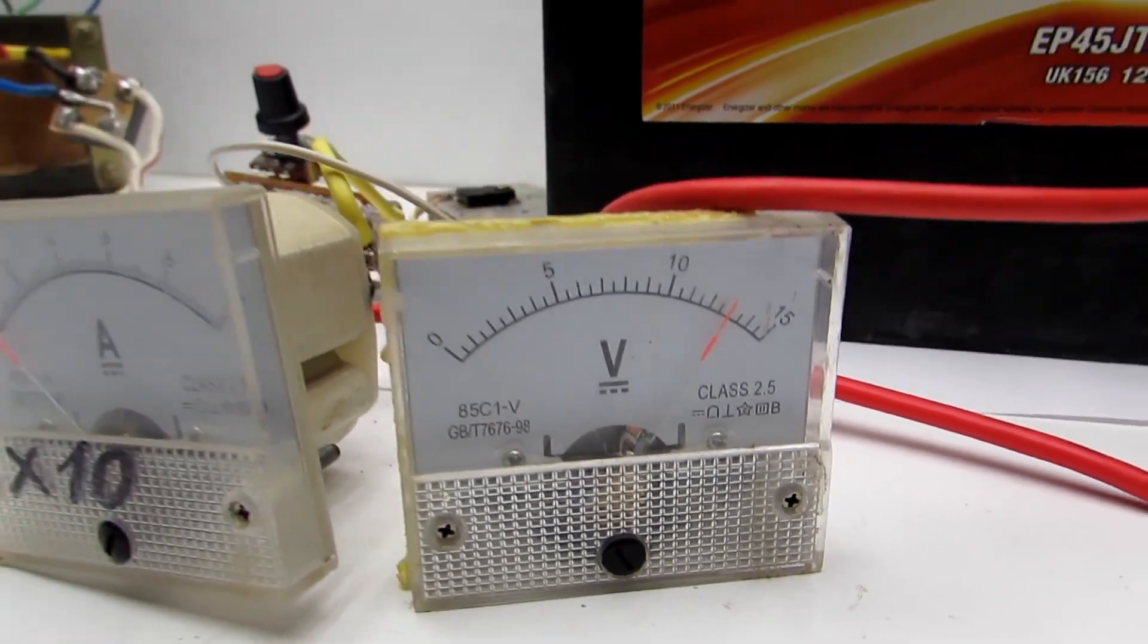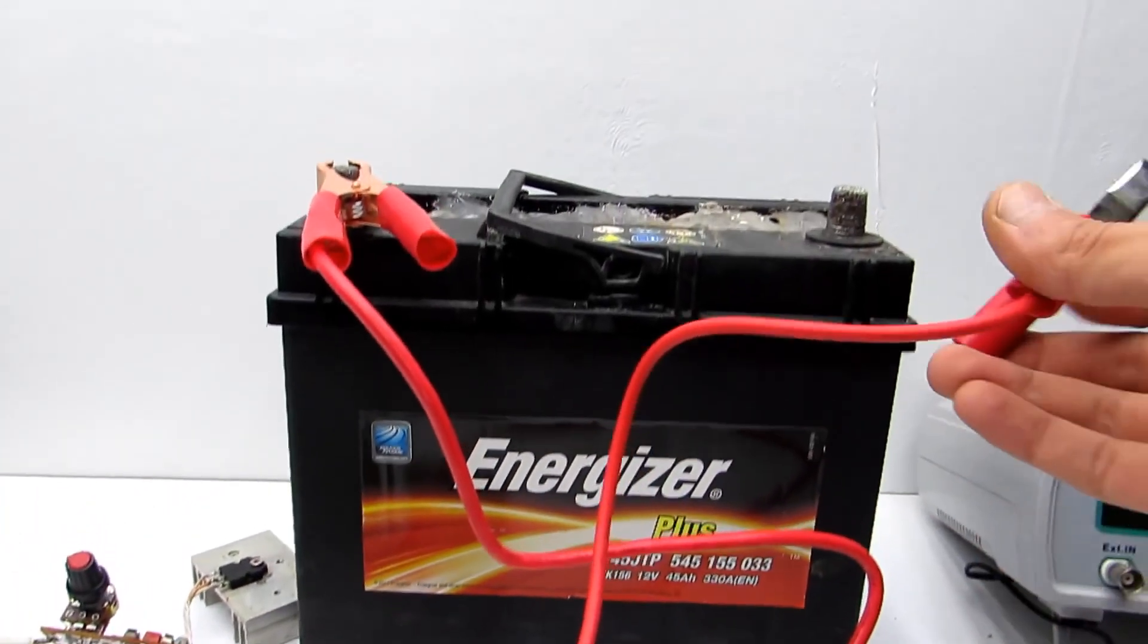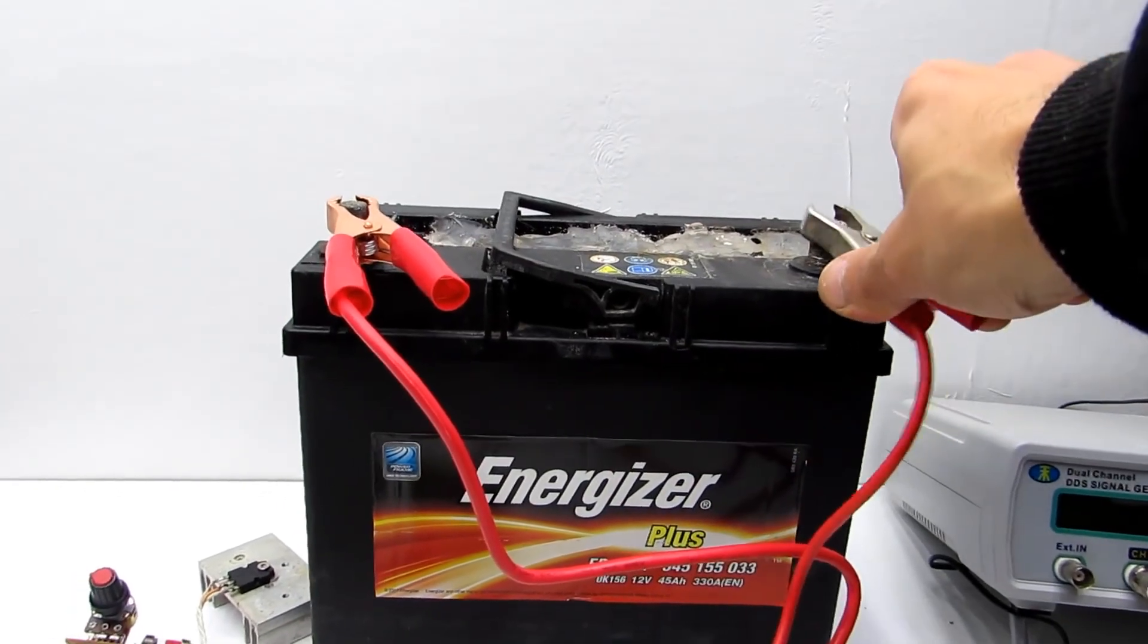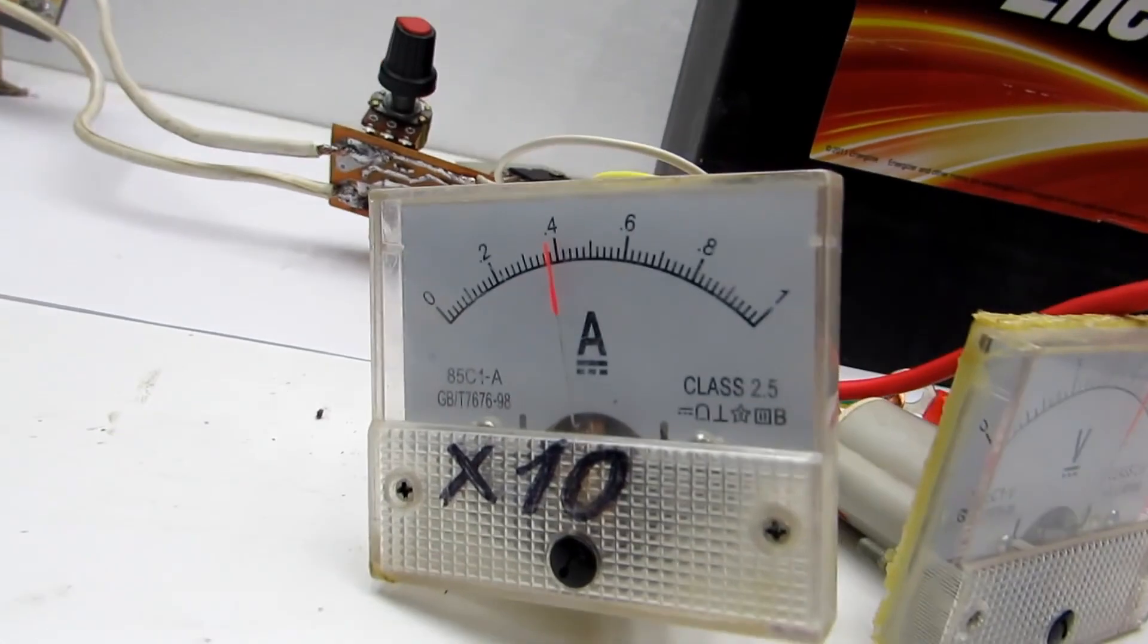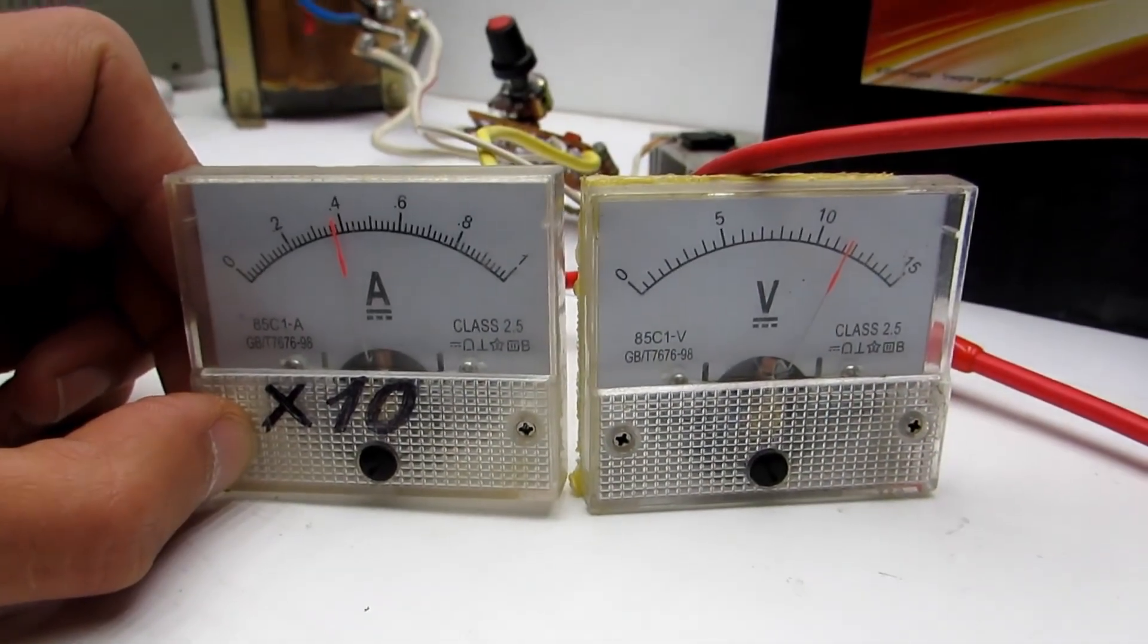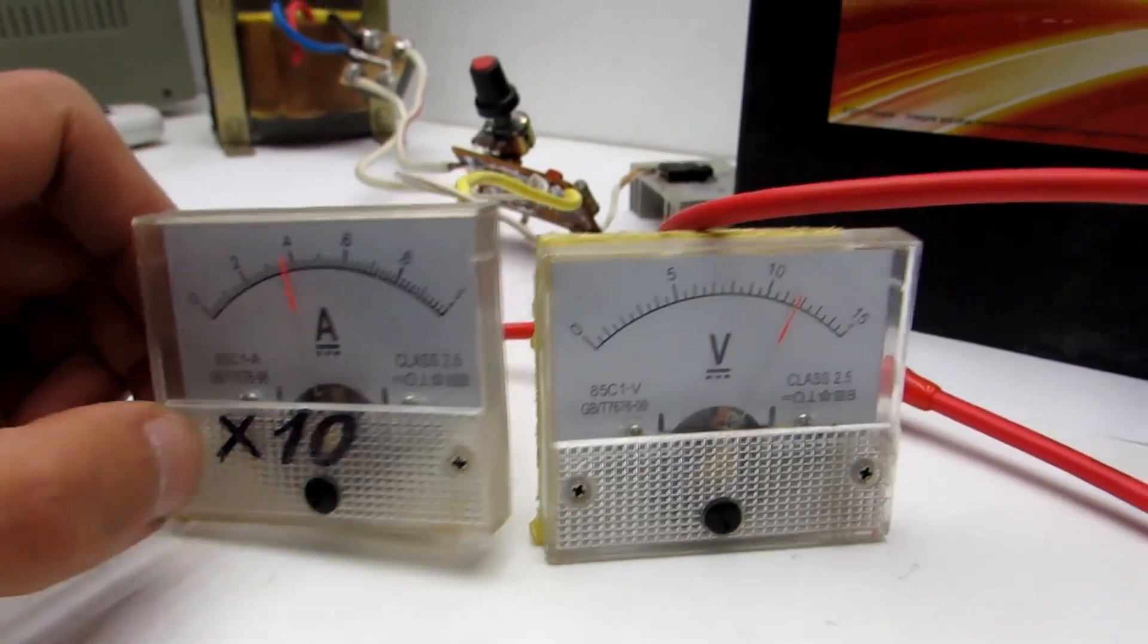This is voltage of fully charged battery. Next connect the device to the battery. Be careful, connect plus to plus and minus to minus. When battery will charge the current will continuously reduce. At the end it will become about zero. This means that the battery is fully charged.